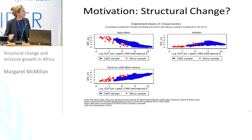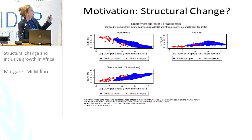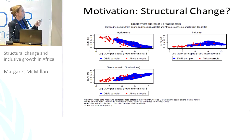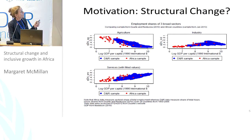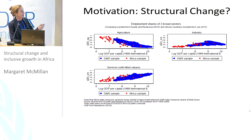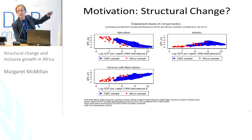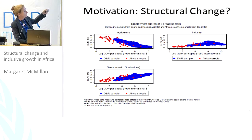The vertical axis is the share of agriculture in total employment, and across the horizontal axis we have log GDP per capita. The red dots are Africa, and the blue dots are the data from Duarte and Restuccia.